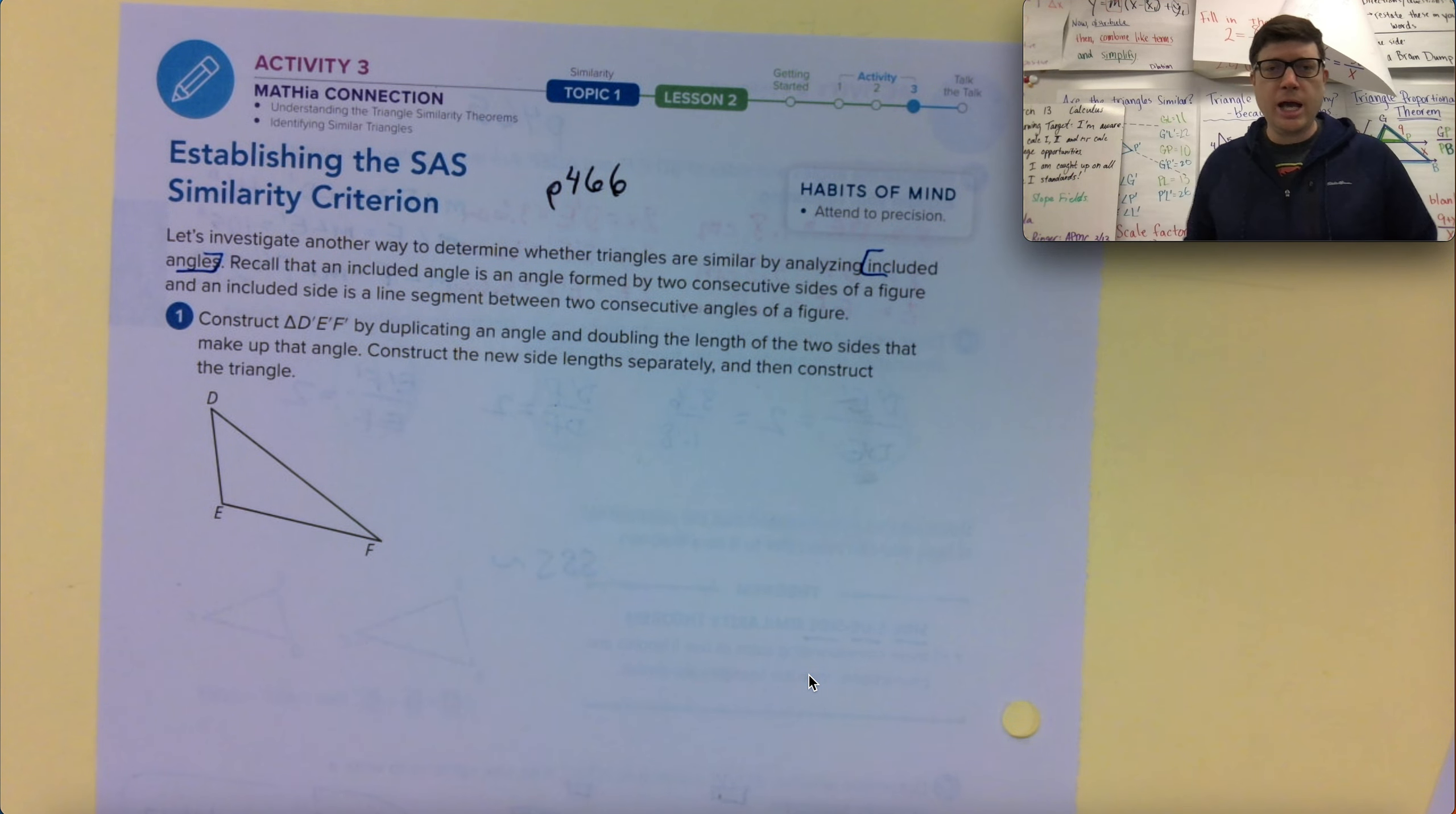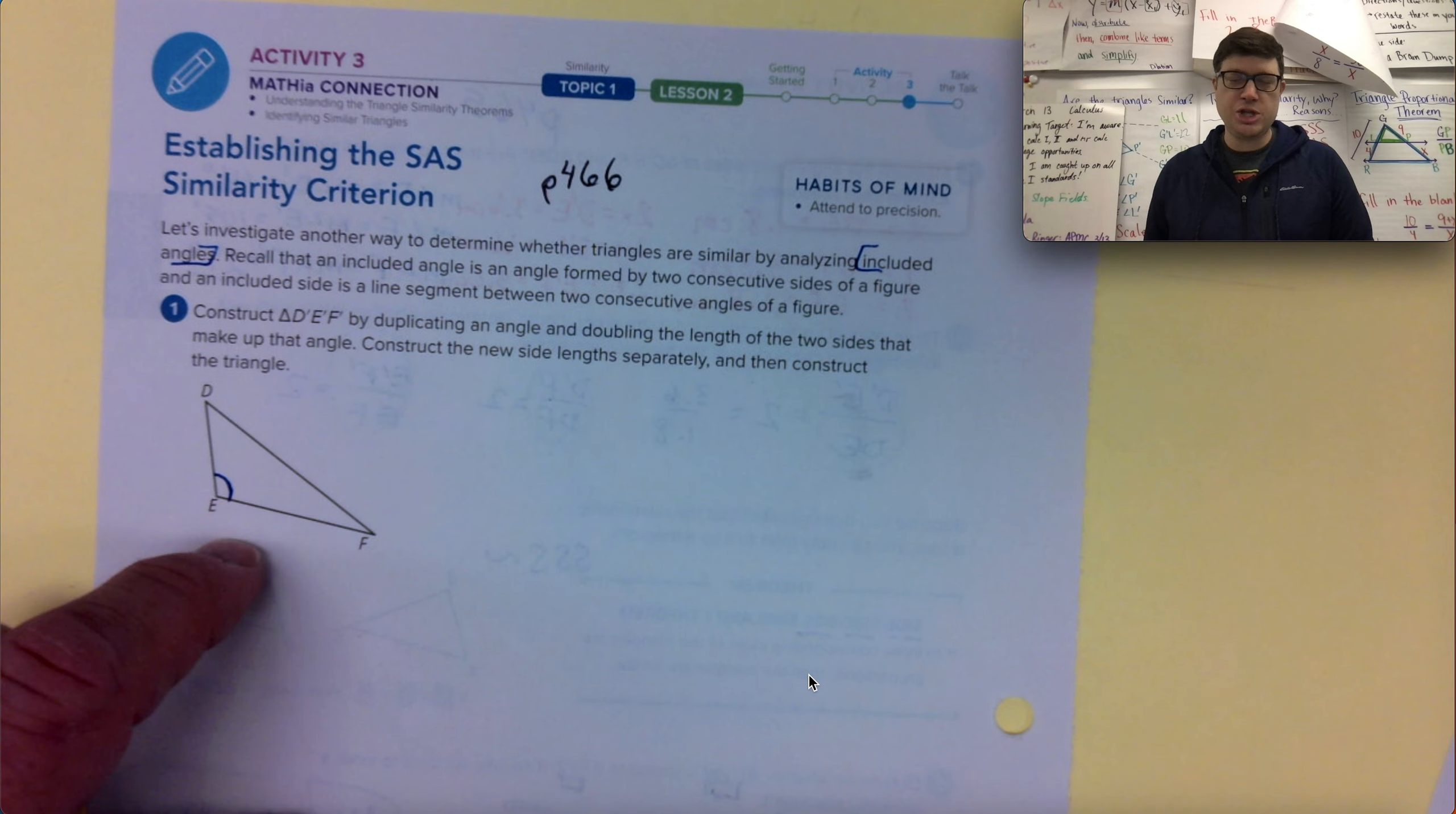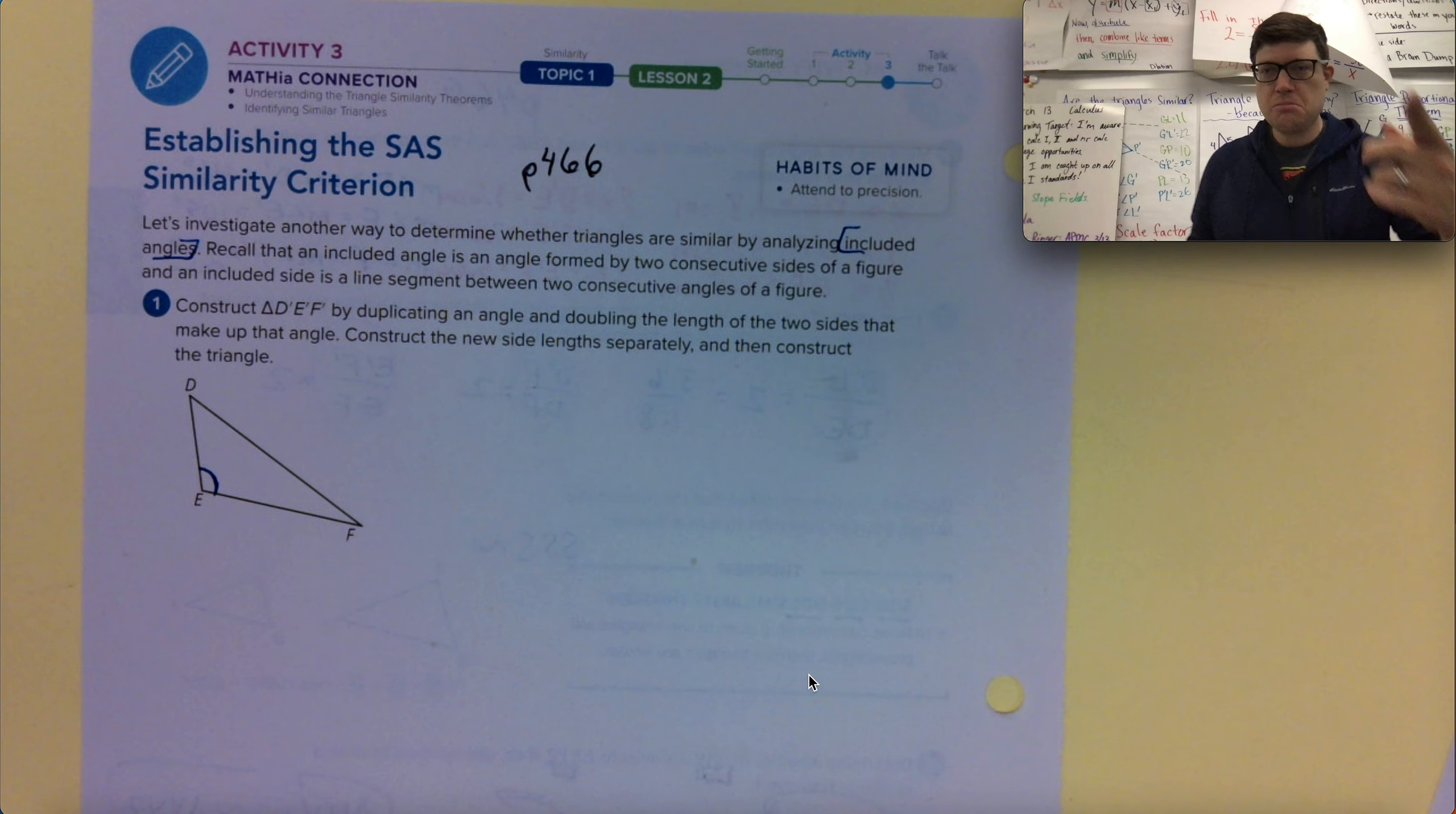Recall that an included angle is an angle formed by two consecutive sides of a figure, and an included side, so this is the included angle, is a line segment between two consecutive angles, which I'm not actually going to highlight the included side because we're not using that in this shape. But if you did angle-side-angle in a previous geometry triangle congruence shortcut video or practicing, that's what they mean. Angle-side-angle would be that sentence. Not worth writing down, but just hearing me say it.